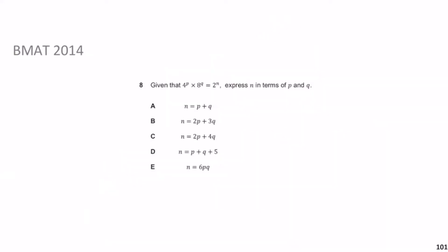Now we move on to the next question: BMAT 2014 Question 8. Given that 4 to the p times 8 to the q equals 2 to the n, express n in terms of p and q. Pause the video, give yourself a minute, then we'll go through the solution.